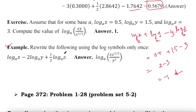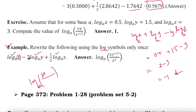This next problem says: rewrite the following using a single log — using the log symbol only once. There are three logs. The preceding sign of the first term is plus, so x will be in the numerator. The preceding sign of y squared is minus, so y squared goes in the denominator. The preceding sign of z to the power half is plus, so z to the power half goes in the numerator. So the result is log of x times z to the power half divided by y squared.